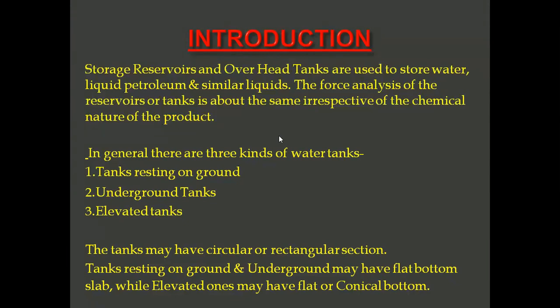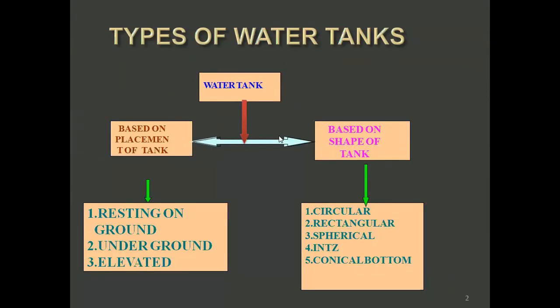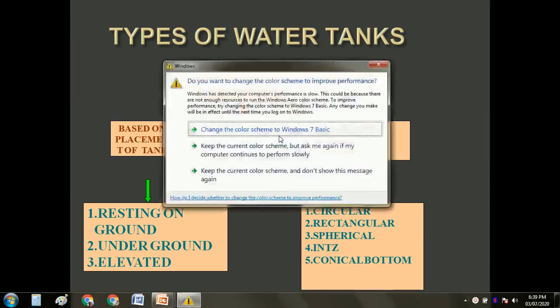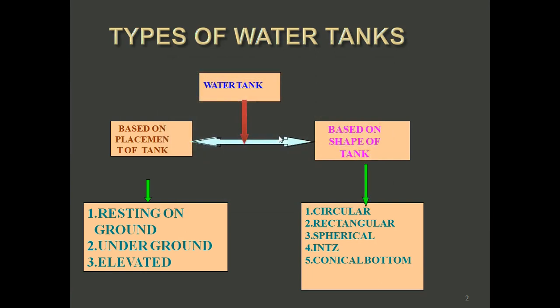The tanks may have circular or rectangular cross sections. Tanks are further classified as rectangular, circular, and intze tanks. Tanks resting on ground and underground tanks may have flat bottom slabs, while elevated ones may have flat or conical bottoms. Based on placement, water tanks are classified as resting on ground, underground, and elevated. Based on shape, they are classified as circular, rectangular, spherical ends, and conical bottom.